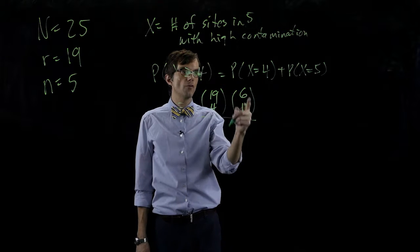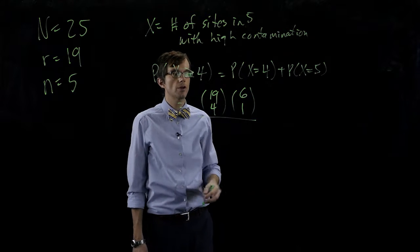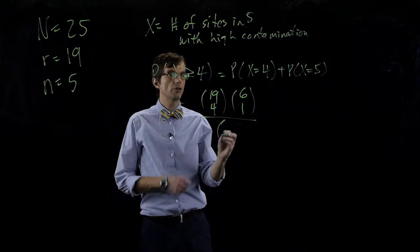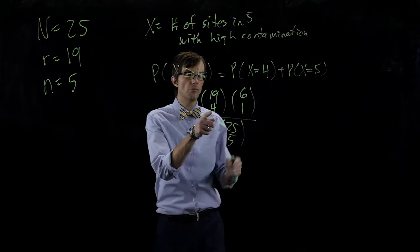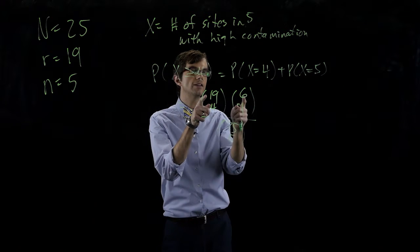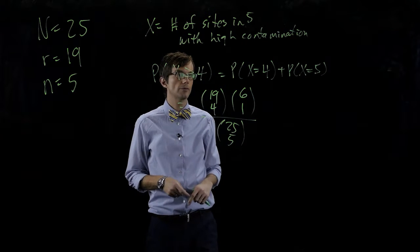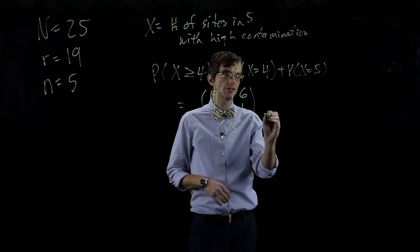That is going to give us this. That's the number of ways that we can get X equals four. And in the denominator is just the total number of ways that we can pick five sites in general. Remember, this four and this one should sum up to five. This nineteen and this six should sum up to twenty-five. It's a way to check to see if you're getting this done correctly.